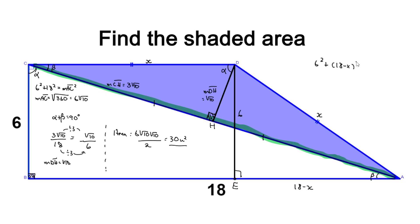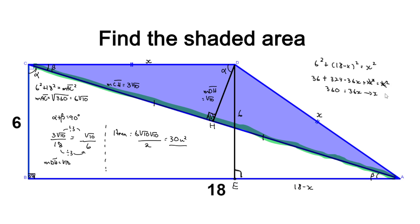Now we can set up an equation. The sum of the squares of the sides that form the right angle — that is 6 and (18 minus X) — equals the square of the hypotenuse. So we get 36 plus 324 minus 36X plus X squared equals X squared. The X squared terms cancel, giving 360 minus 36X equals 0, and moving 36X to the other side we get X equals 10.